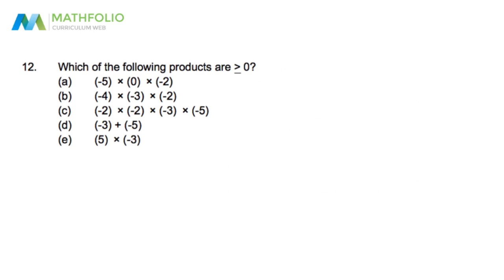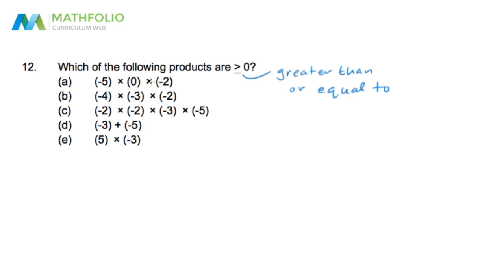Question twelve: which of the following products are greater than or equal to zero? First we need to recognize that the inequality symbol means greater than or equal to. Let's go through each option. Negative five times zero — anything times zero is zero. Then zero times negative two is also zero. So this first option equals zero. For the second option, negative four times negative three: four times three is 12, and a negative times a negative is positive, so that gives us positive 12.